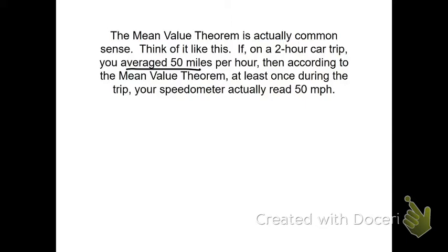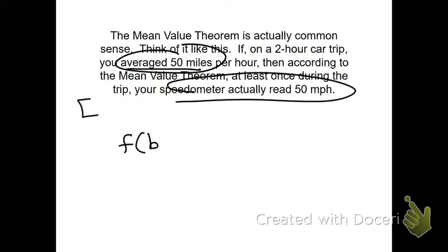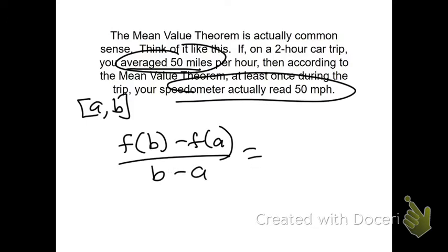That's what the mean value theorem says. It basically says that your average rate of change has to equal your instantaneous rate of change at some point, as long as I didn't stop. So, average rate of change, that's like your Algebra 1 slope. If I had n points on the interval from A to B, my average rate of change is like my Algebra 1 slope. It has to equal my instantaneous rate of change, which is basically the derivative. And that right there is the mean value theorem.